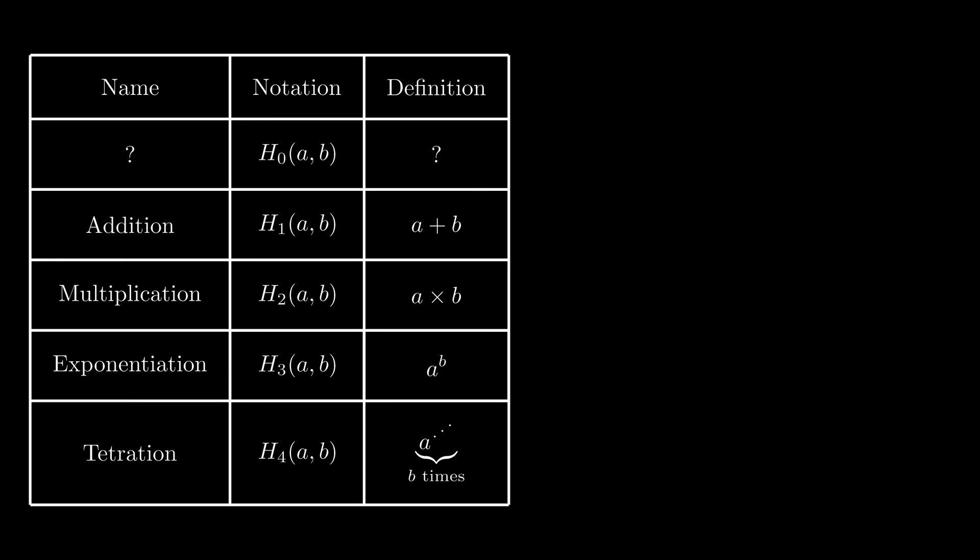How about we starting with multiplication? So H2(a,b) equals a multiplies b. Then we expand it as a plus a multiplies b-1. We can identify the same recursive structure as addition is the hyperoperator right in front of multiplication.